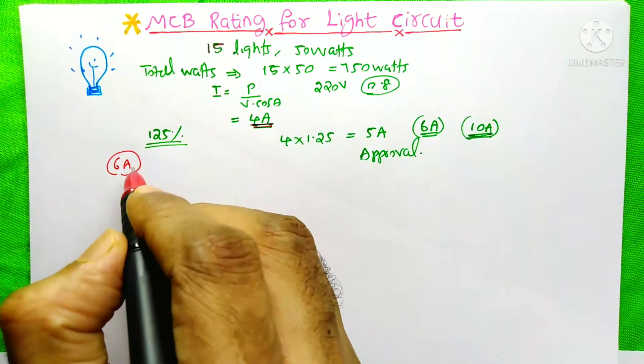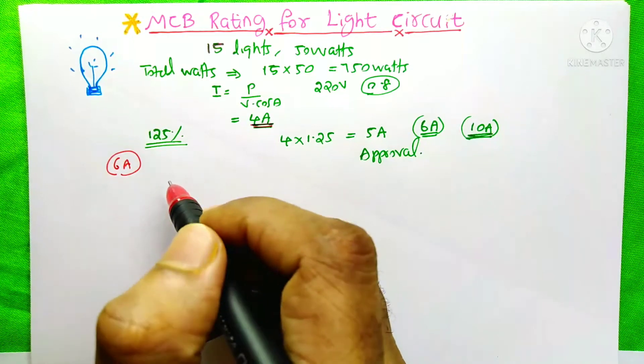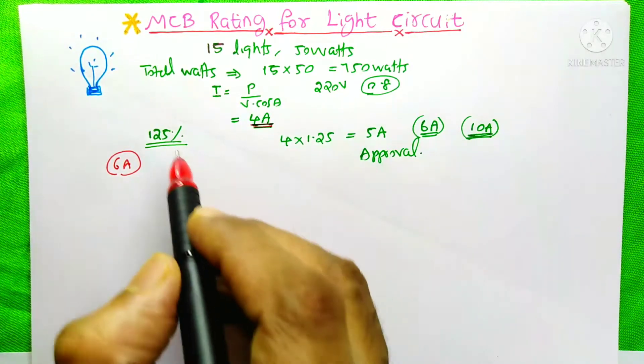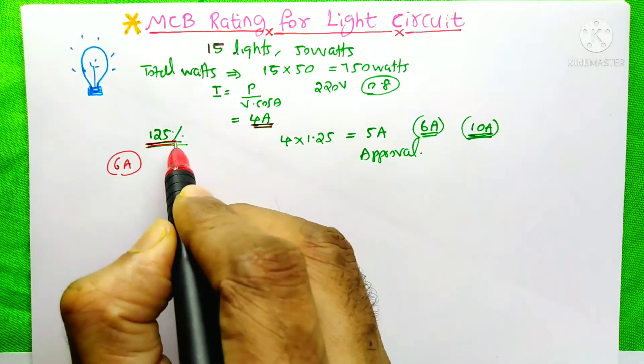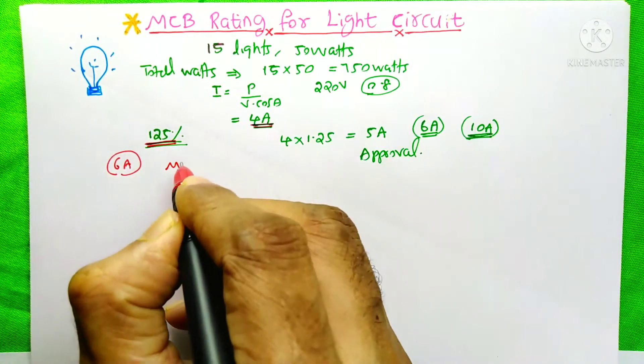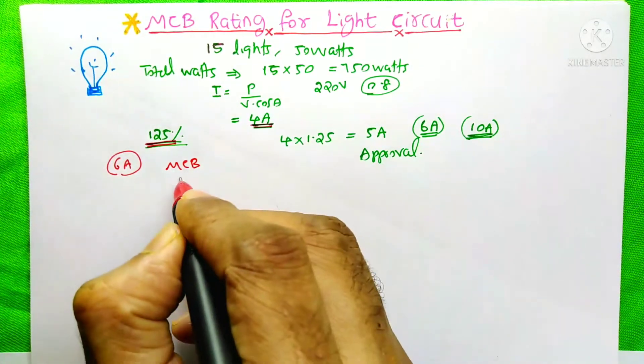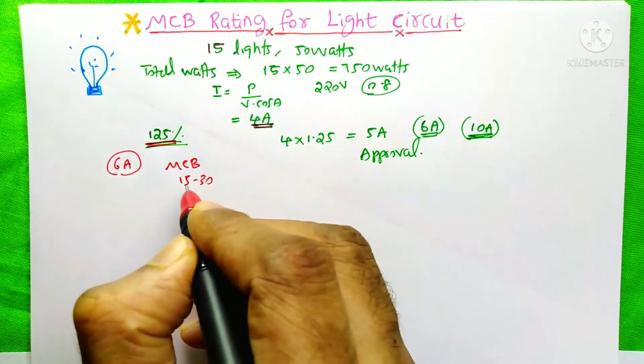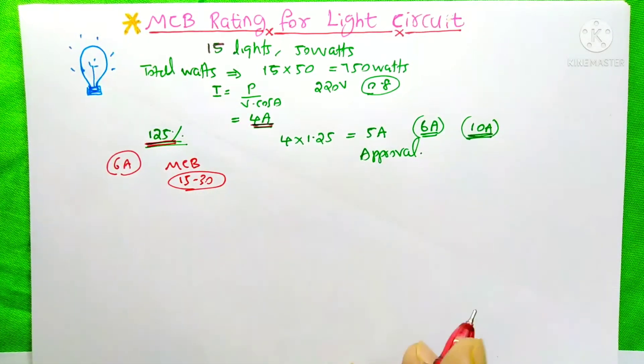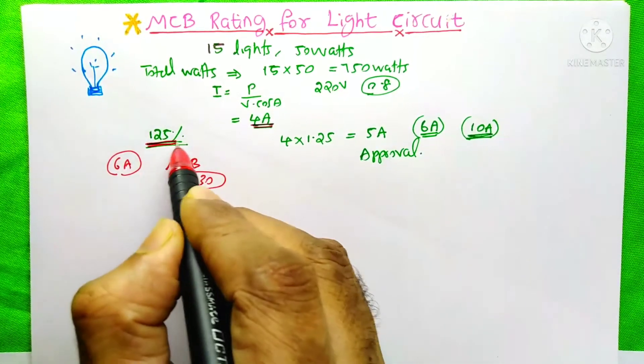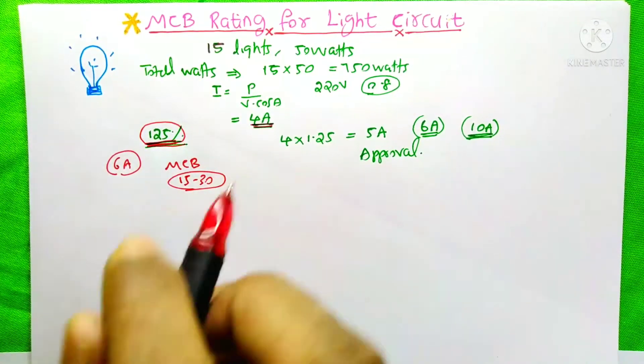If you choose a 6A MCB for this, then you're not giving any safety margin. If you put that MCB on the circuit, then after 15 or 30 minutes your MCB will trip. You always need at least a 125% safety margin for your light circuit.